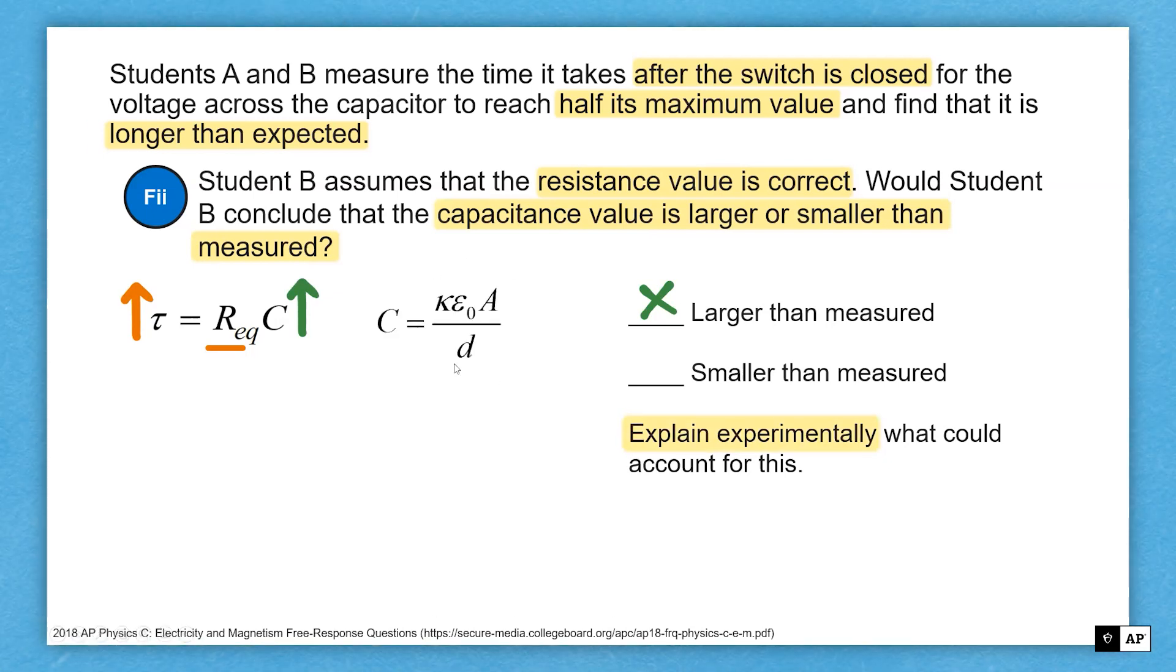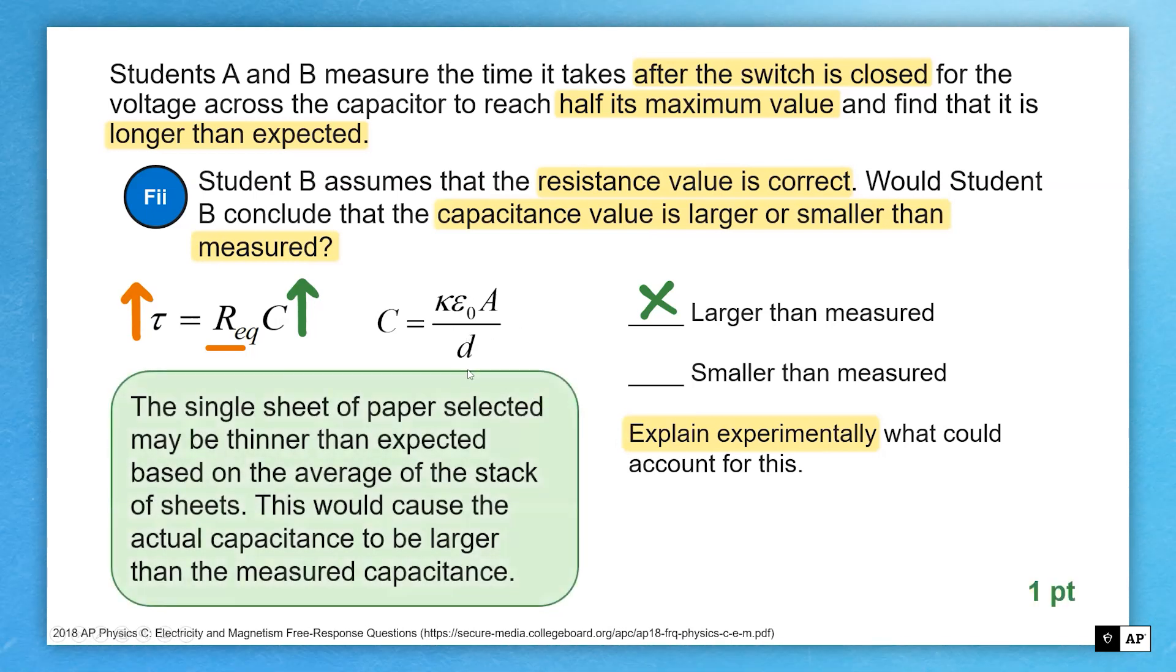What could have caused this to happen? Well, when we look at capacitance, we have a couple terms here that we could mess with, but one that we're choosing to pick with here is this distance d. We can say, before we had 500 sheets of paper, but now we just have one. That one that we picked could have been a little bit smaller, and it being smaller would have raised the capacitance.